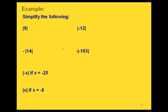Let's simplify some of these — you can do this with or without a number line. For positive numbers, absolute value just gives you the same value back. If we graphed 9 on the number line, it would be 9 units from zero, so the absolute value of 9 is just 9. If we're finding the absolute value of negative 12: negative 12 would be 12 units from zero, so the absolute value of negative 12 is just 12.